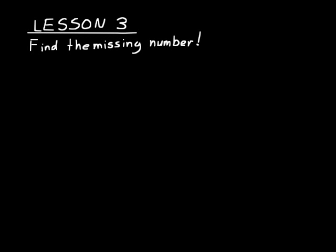I think the best way to do this lesson is to just do a lot of problems, so let's go ahead and start. Let's try this one. A — that's our missing number, we'll just call it number A. A plus 13 equals 26. Remember, write this down — anytime we're doing anything on the board you should write it down with me. So we have our sum and one of the addends, but we don't know what the other addend is. Let's think about our fact families. How could we figure out what A was? A plus 13 has to equal 26.